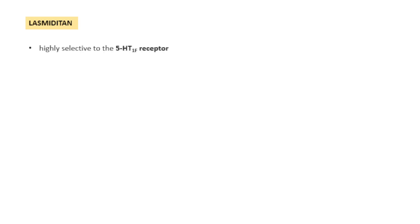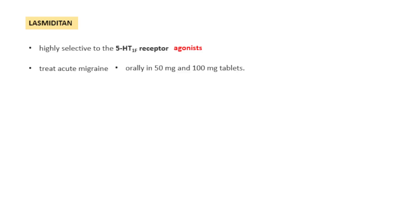Lasmiditan is a highly selective 5HT1F receptor agonist — it is a serotonin receptor agonist. These 5HT1F receptors are present in the trigeminal ganglia, both in the periphery as well as in the central trigeminal ganglia. Lasmiditan is basically used to treat acute migraine and has to be given through the oral route.